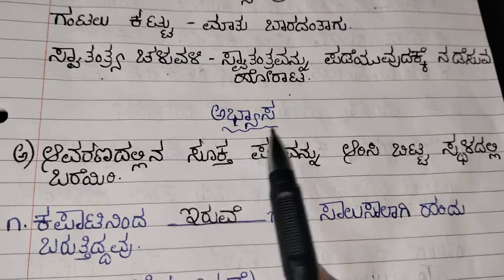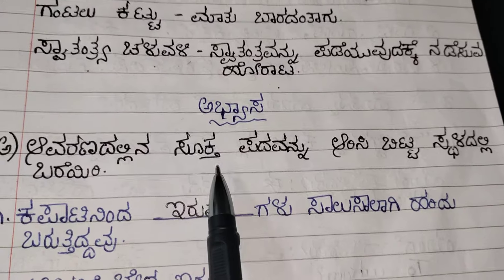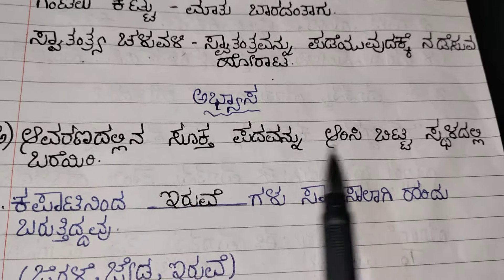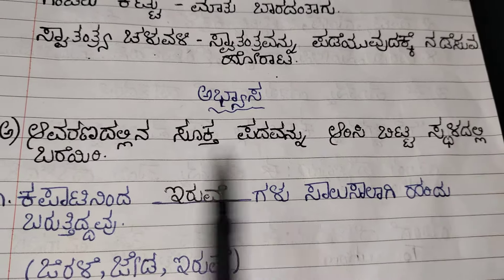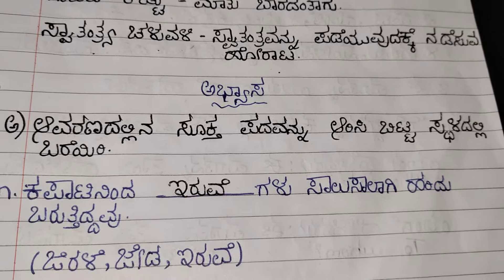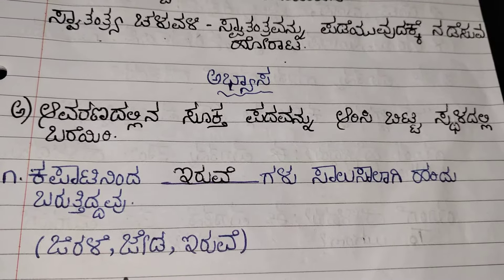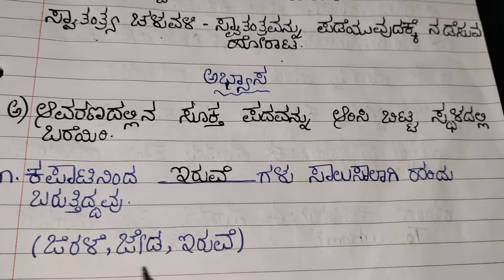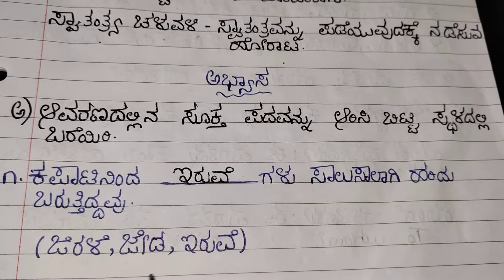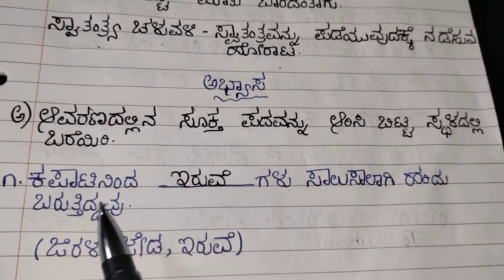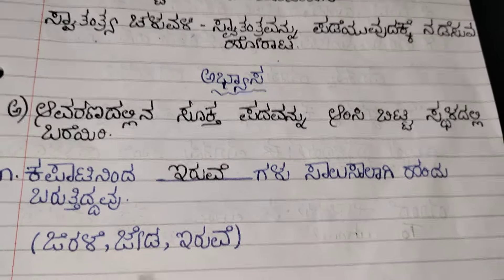Next, Abhyasa. Avaranadallina Suktapadavannu, Arisi, Bittasthadadalli, Bareri. That means they have given some words here. You need to choose the correct option, choose the correct word, and fill in the blanks.